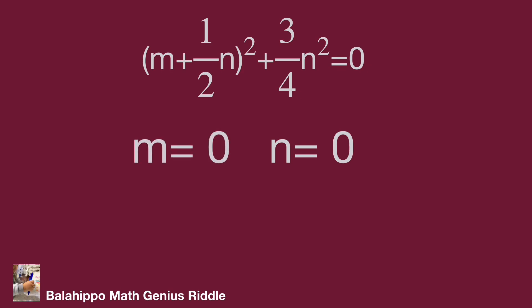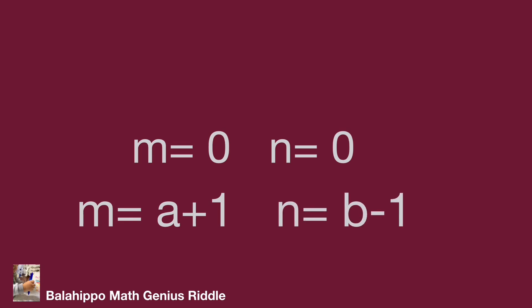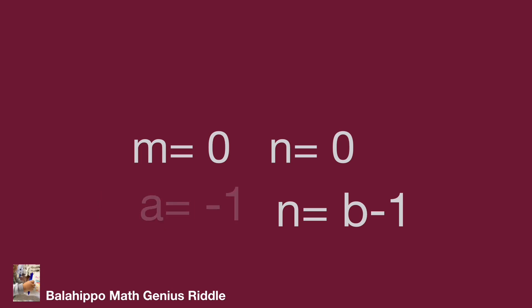We defined m equal to (a + 1) and n equal to (b + 1). So, 0 equals (a + 1), giving a equals minus 1. And 0 equals (b + 1), giving b equals 1. That's the answer — do you find it? Hope you enjoyed the video. Thank you.